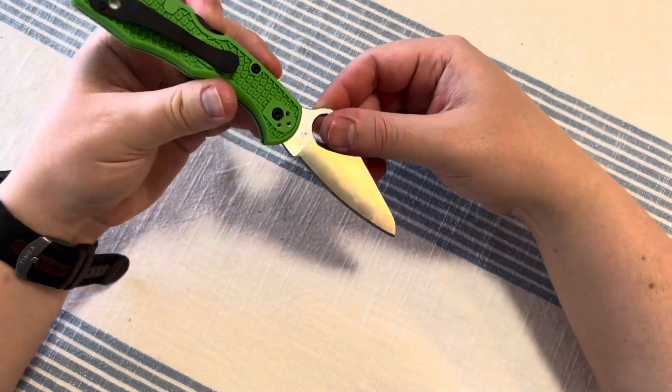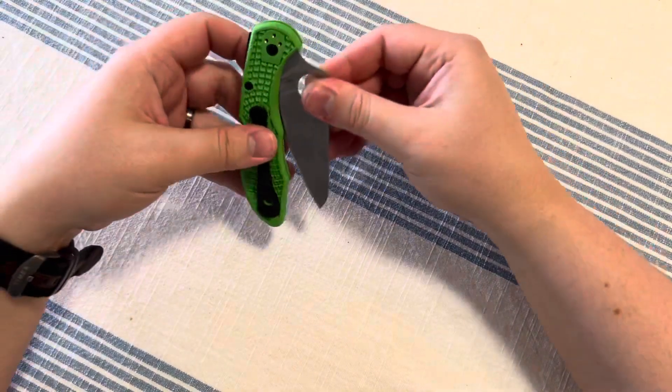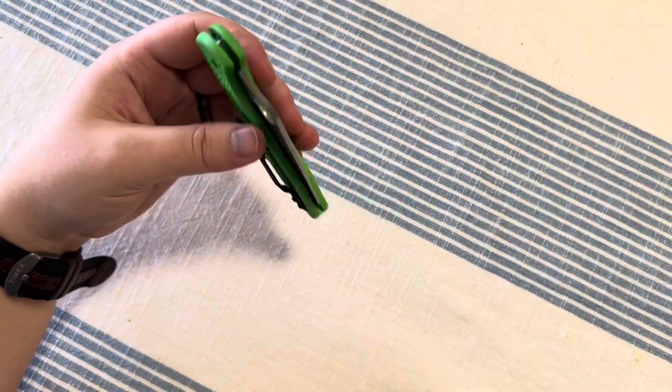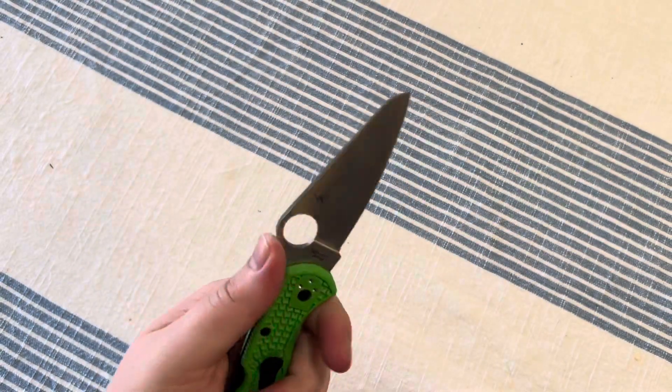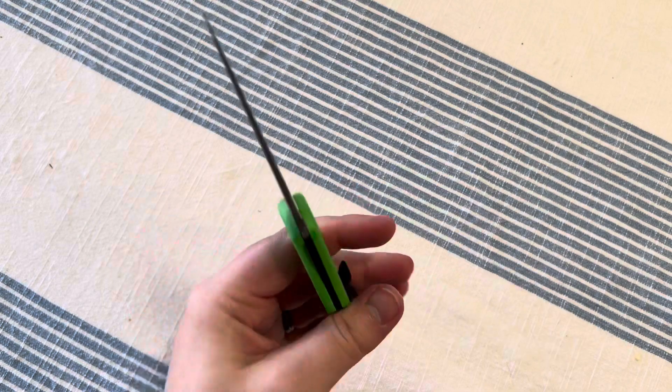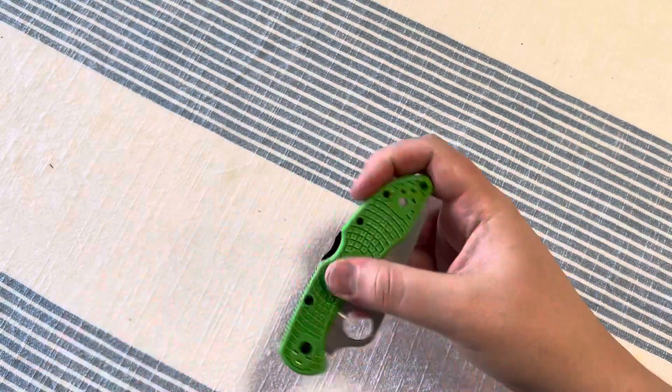You know what, if I do get a Delica, it'll be K390, and it'll be a test knife for K390. Although I have my Endela that I got reground, so that's the carry knife probably for K390. And an Endura.